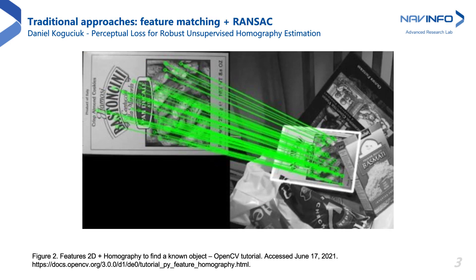Traditionally, homography estimation was performed using non-learnable approaches, either in pixel space like direct methods, or in handcrafted feature space — feature-based methods. Feature-based methods usually perform better than direct methods. However, their success depends on the quality of the handcrafted stages and the content of the image itself. Poorly distributed features, illumination variations, or large viewpoint differences are challenging for both direct and feature-based methods.